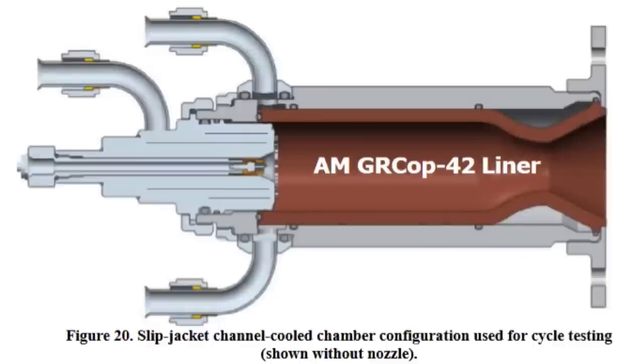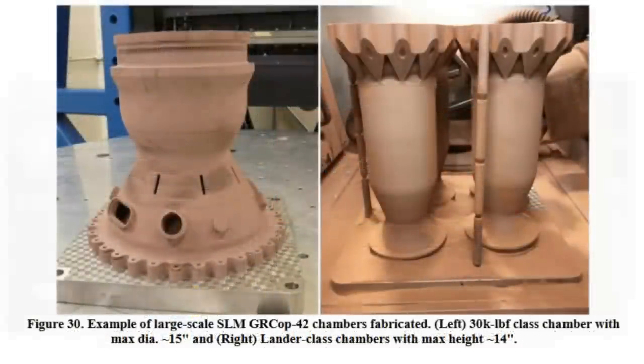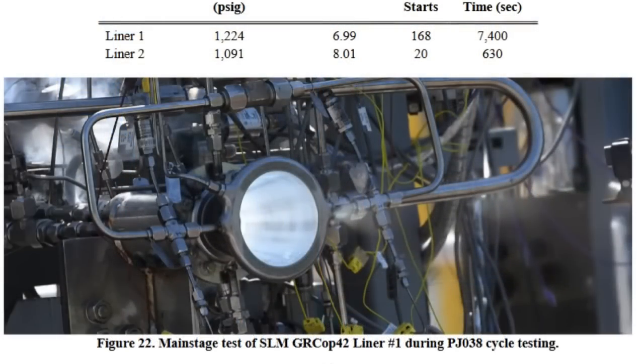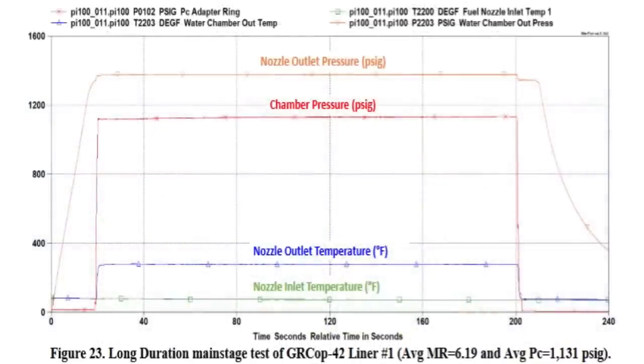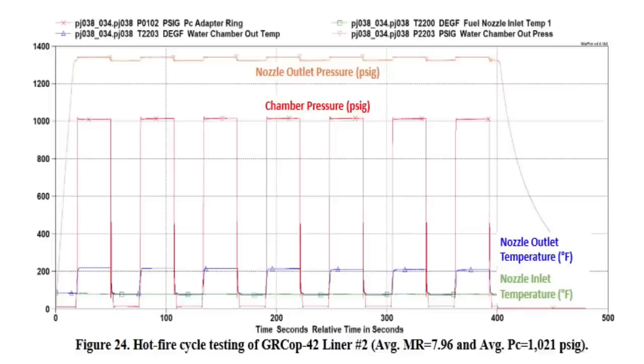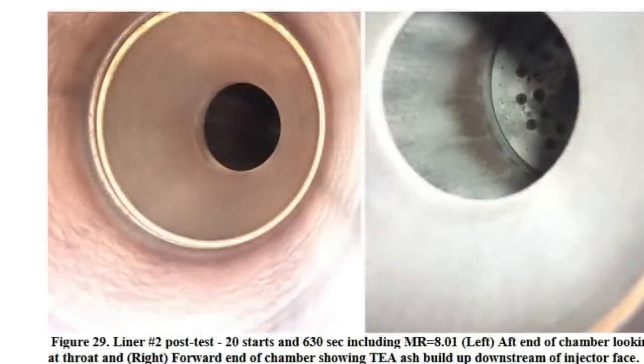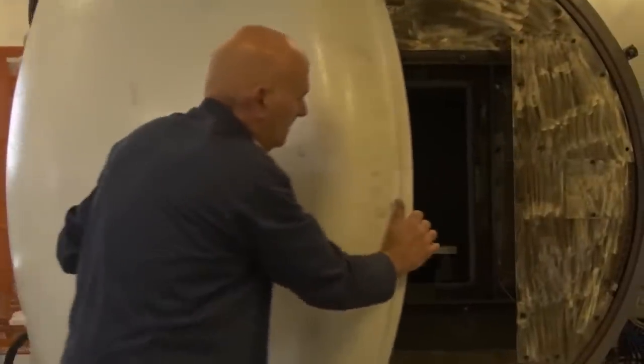Here we see what is called a slip jacket channel cooled combustion chamber. The nozzle would go down here. The copper liner could be printed and inserted into this steel titanium or Inconel jacket. Here are liners printed from the copper alloy, and here is a test being conducted on one of them. Here we see a long duration test result of a GRCOP 42 liner. Here we see the nozzle inlet temperature, outlet temperature, chamber pressure in imperial, and nozzle outlet pressure. This looks pretty stable to me. Then they test the system with rapid power cycling, firing the engine in bursts. We see that the alloy performed well here also. A visual inspection of the interior of these liners shows that they stood up very well to these tests. Finally they printed and tested larger liners and released their results to the world.